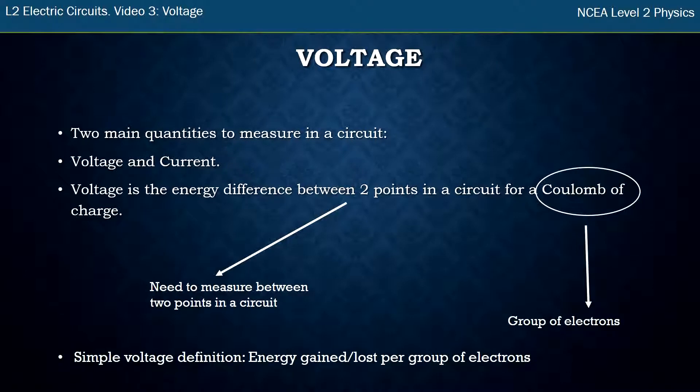So a simpler definition that I use, as opposed to this true definition, is I just say the energy gain or loss per group of electrons. And sometimes in my brain, I just simplify it down to the energy gain or loss per electron, which is not strictly true because we're always talking about a group of electrons. But just sometimes to understand circuits, it helps me to think of it, the energy gained or loss per electron.